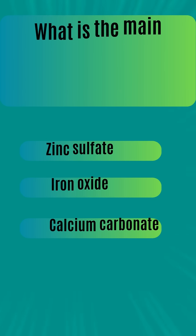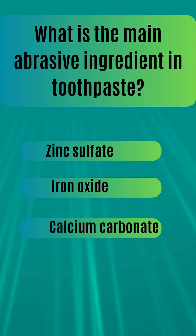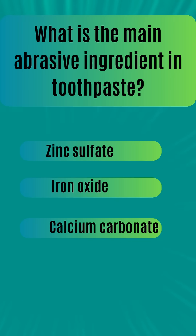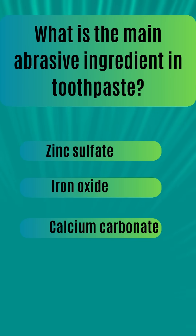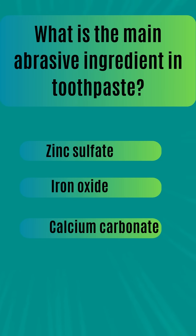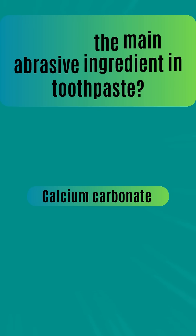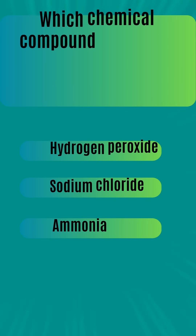What is the main abrasive ingredient in toothpaste? Zinc sulfate, iron oxide, calcium carbonate. The answer is calcium carbonate.